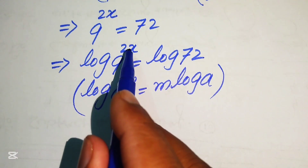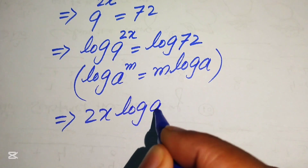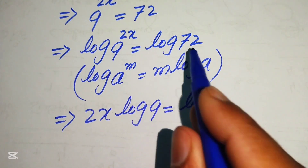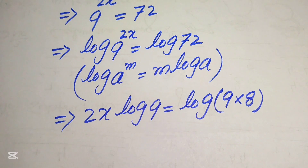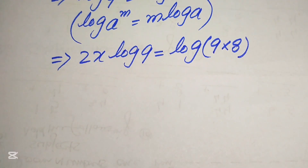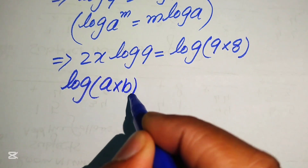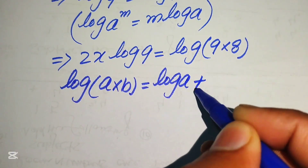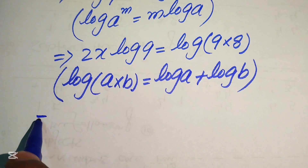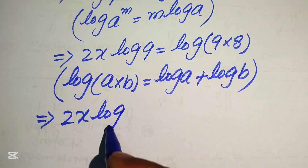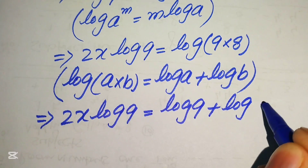Using this property, we move the exponent 2x to the front, giving 2x times log 9 equals log 72. We rewrite 72 as 9 times 8, then apply the product rule of logarithms — log(a·b) = log a + log b — to get 2x·log9 = log9 + log8.